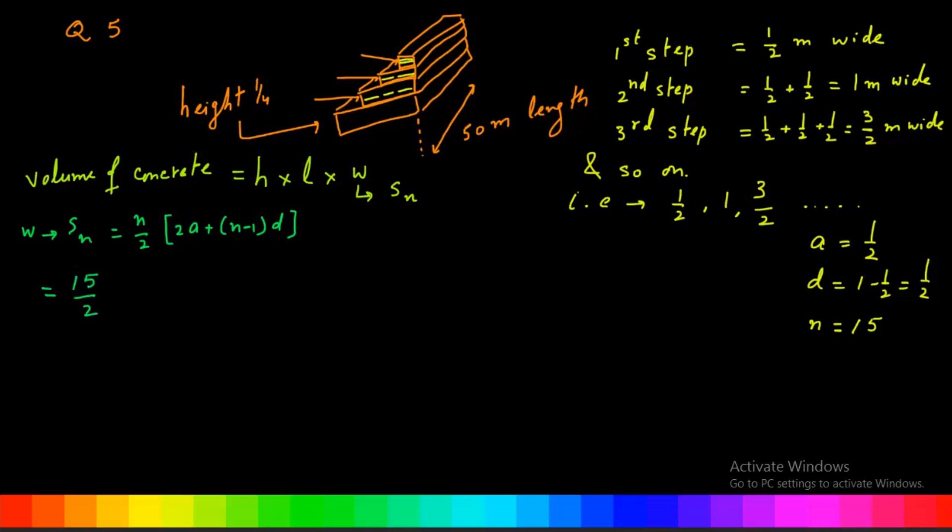Or 15 divided by 2, times (2 times 1/2 plus (15 minus 1) times 1/2). On simplification, 15/2 times (1 plus 14 times 1/2). 2 cuts 14 by 7.